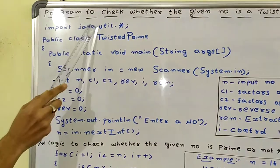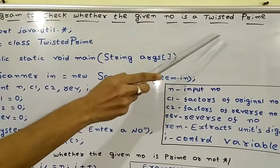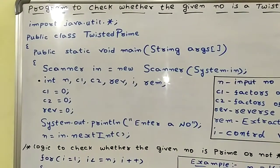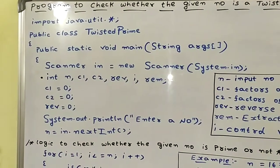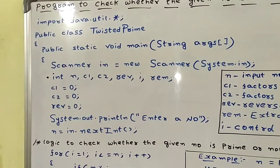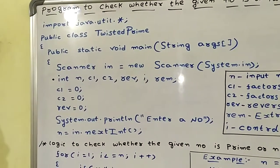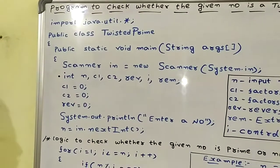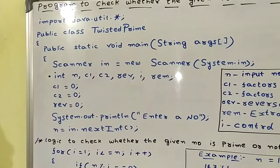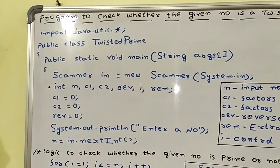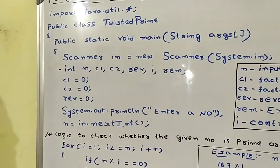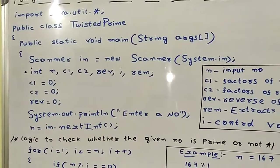This is a program to check whether a given number is a twisted prime or not. It consists of 3 steps. First, check whether the original number is prime. Step 2, find out the reverse of the number. Step 3, check whether the reverse of the number is prime or not. All 3 steps are implemented within this program.